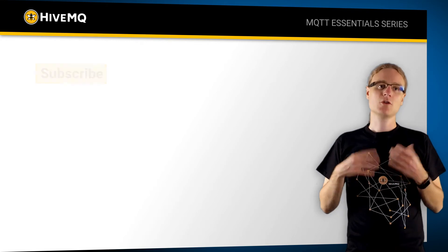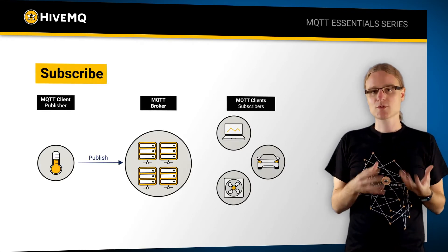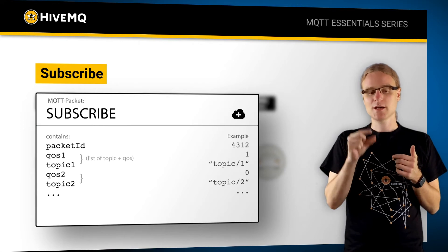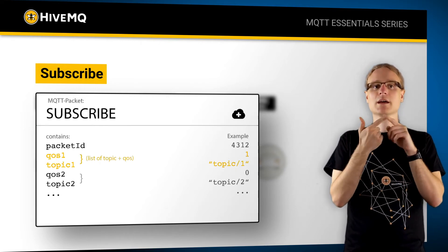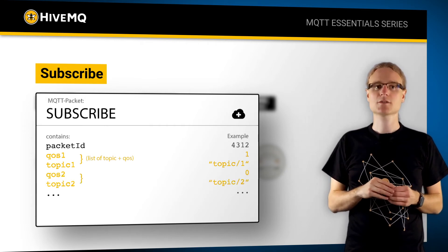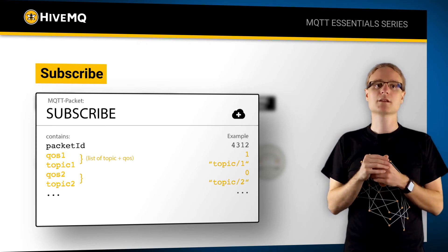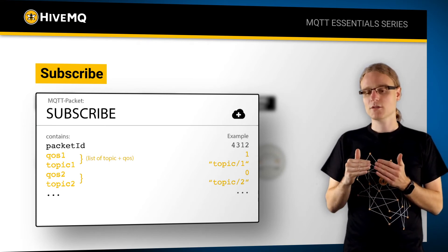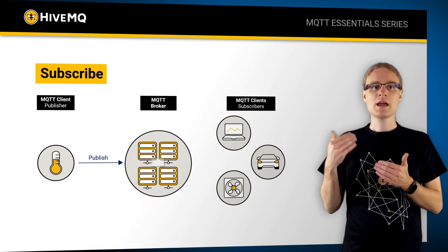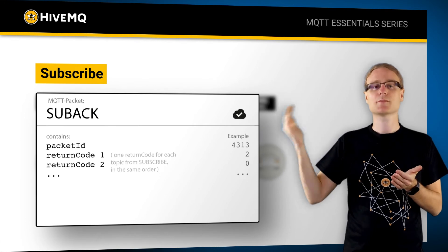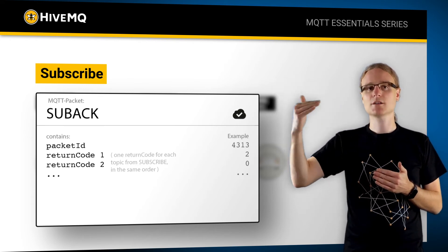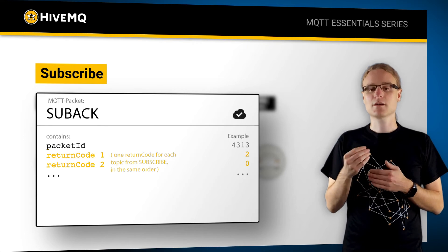Now let's look at another important operation called subscribe. If a client wants to receive data from a broker, it sends a so-called subscribe packet. A client decides to send pairs based on a topic filter and on a quality of service level it wants to receive messages on. A single subscribe packet can carry multiple of these pairs, so you can carry multiple subscriptions in a single subscribe packet. When we talk about MQTT, we usually have thousands or even millions of topics, which is very unique. Then we have the SUBACK packet, which comes back from the broker and tells the client whether the subscription was granted or not, based on permissions and other factors.